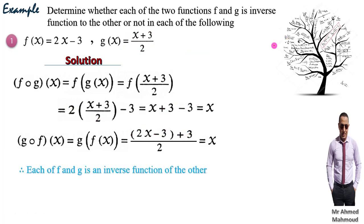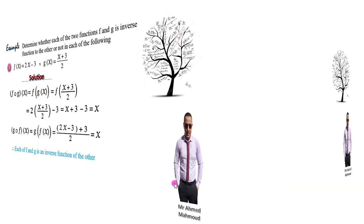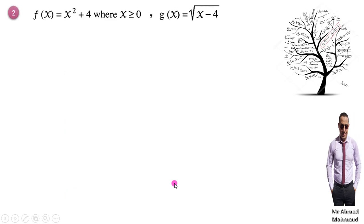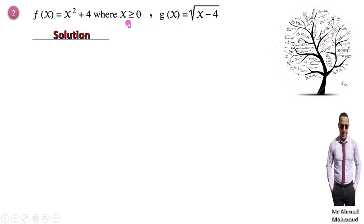So we've shown that f∘g = x and g∘f = x, meaning f and g are inverse functions of each other. Now let's take example number two: f(x) = x² + 4 where x ≥ 0, and g(x) = √(x − 4).